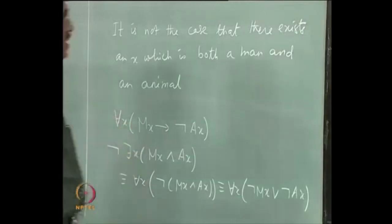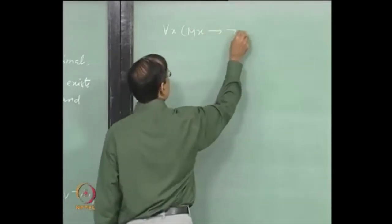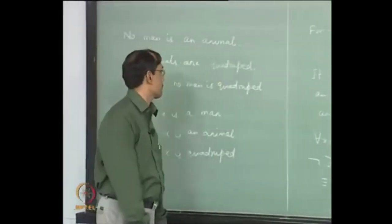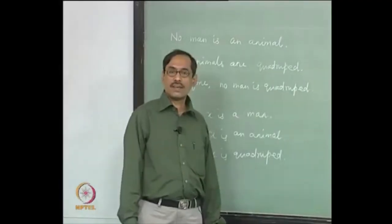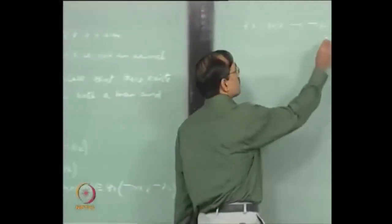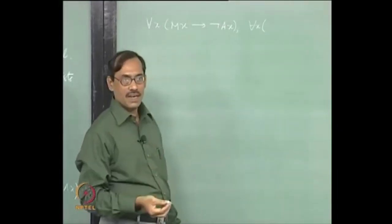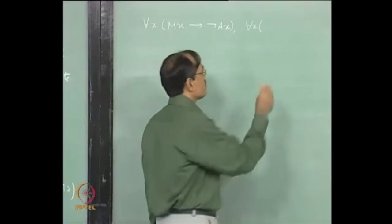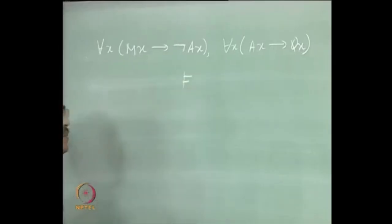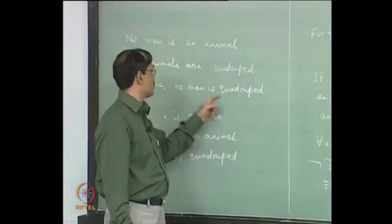Let us take the first one. First sentence, we wrote as: for each X, m(X) implies not A(X). What about the second one? The second one: all animals are quadruped. That is easy. For each X, if something is an animal, then it is quadruped. So, A(X) implies Q(X). Therefore, the last sentence here is: no man is quadruped.